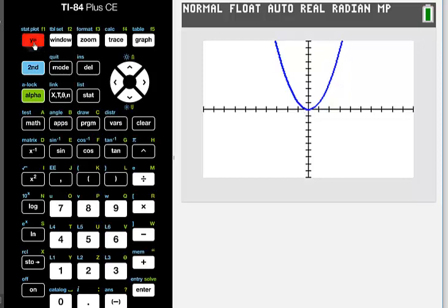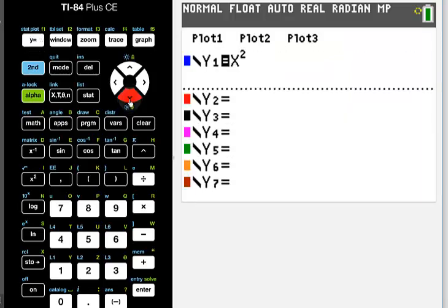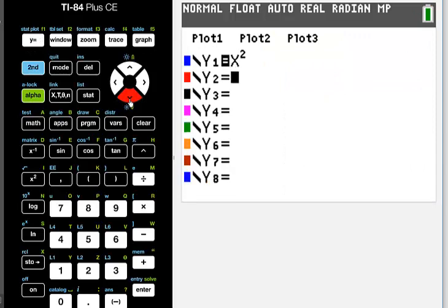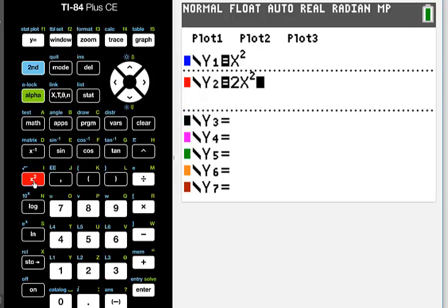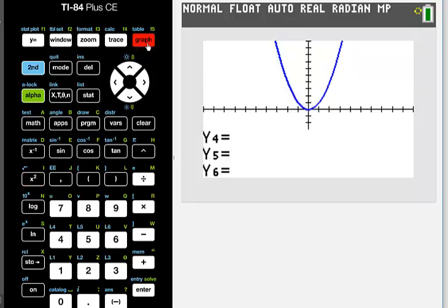Let me go ahead and now add in the second one we had, which was y equals 2x squared. And let's see how the parabola changes when the a changes from a 1 to a 2. I'll hit graph. Okay, the red one is the second one. And, you know, if I were to ask you how it changed, there's probably a few different ways you could describe it.